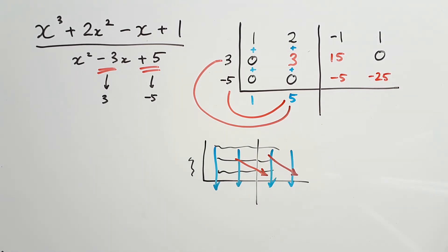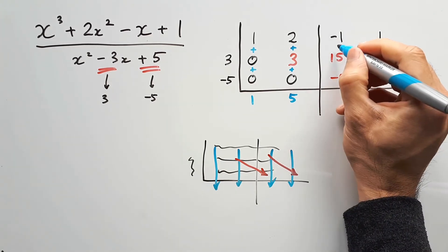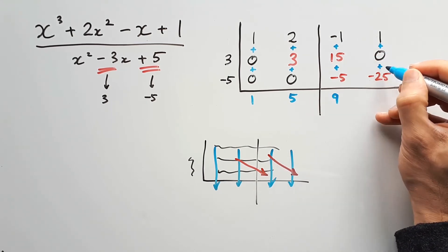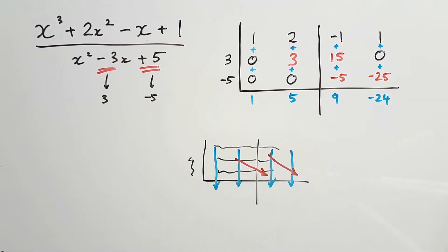And from the looks of it, there is nothing left to fill into the second and third row, so all we need to do is just add downwards for the rest of it, and these are for our remainders. So negative 1 plus 15 minus 5 gives us positive 9, and 1 plus 0 minus 25 gives us negative 24.